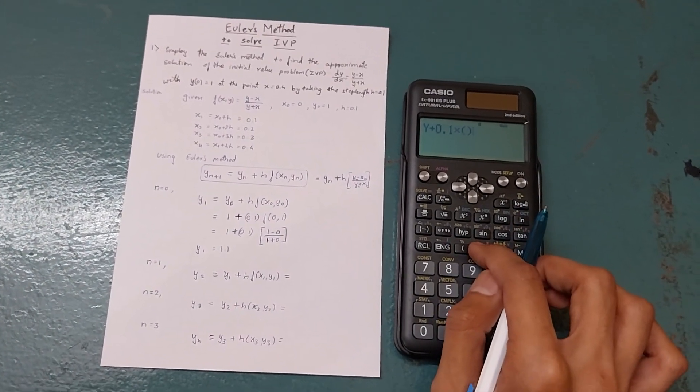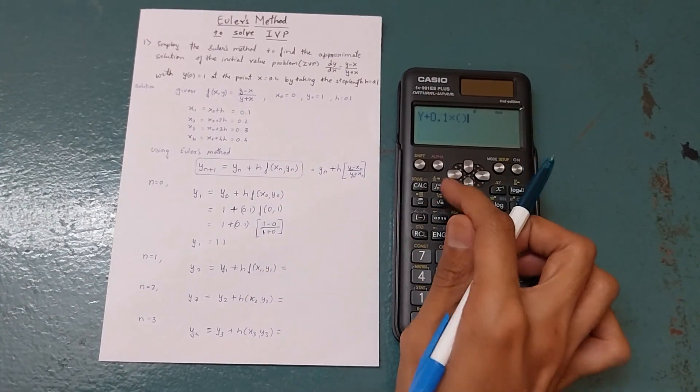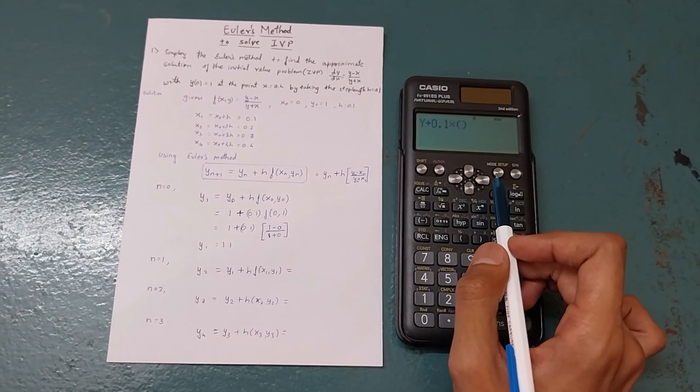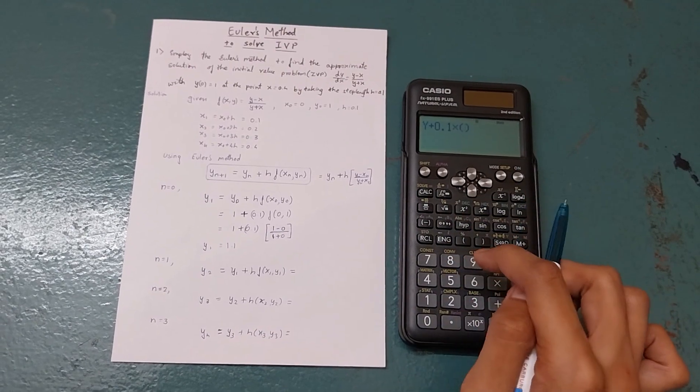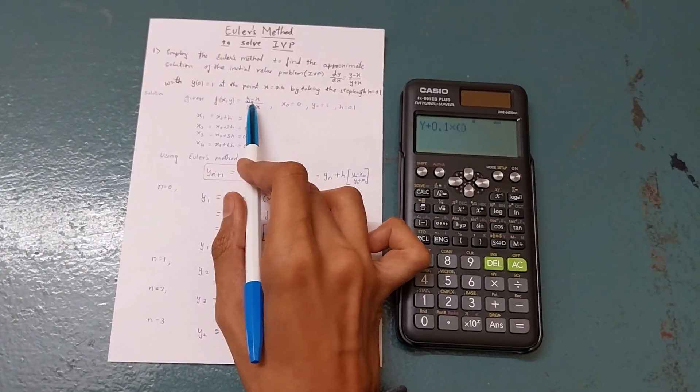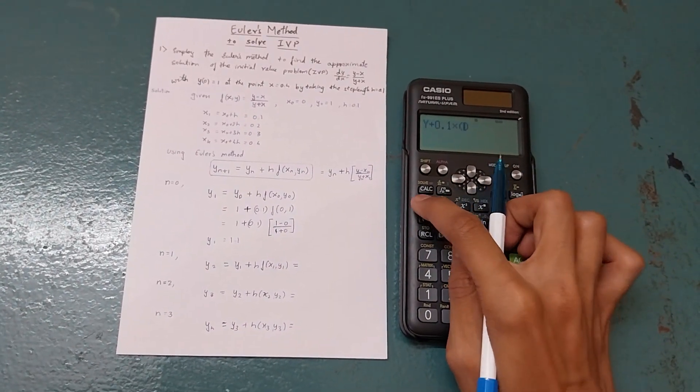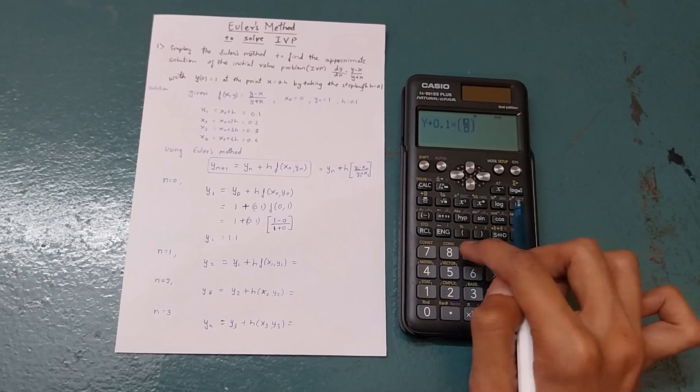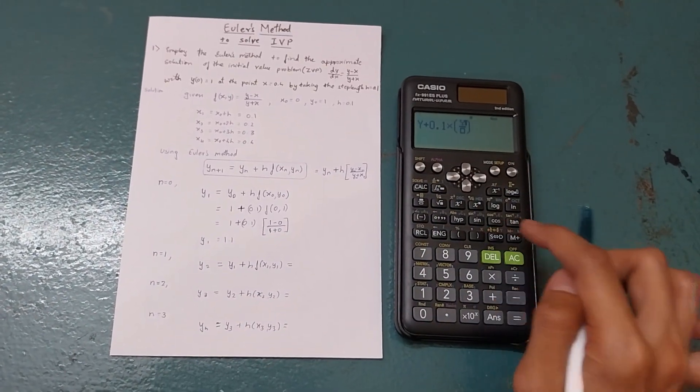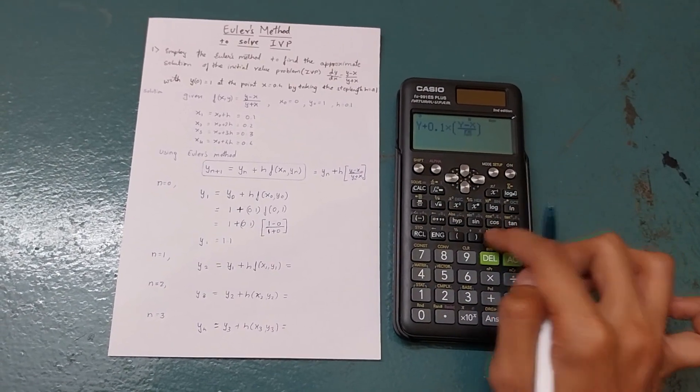Then put two brackets because these brackets contain the function f of x n comma y n. Go inside the bracket and input the function: alpha y minus alpha x divided by alpha y plus alpha x.